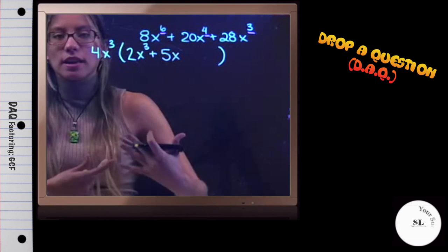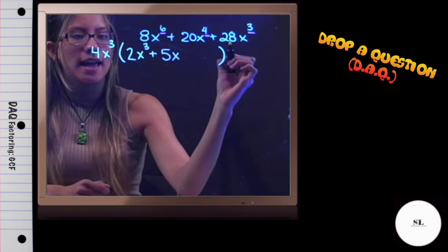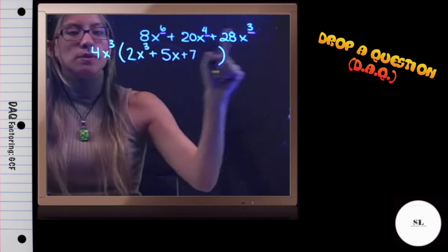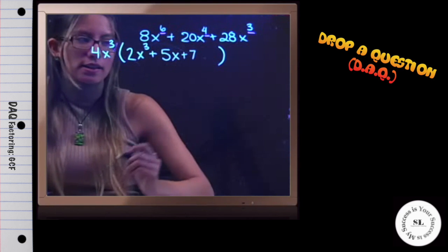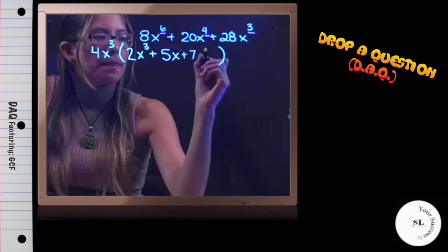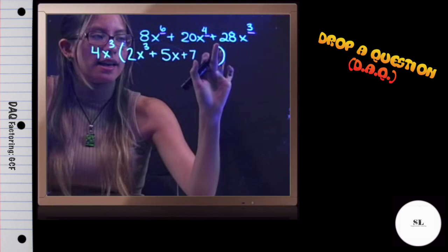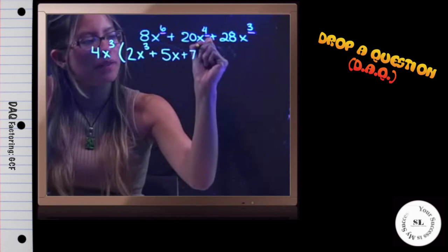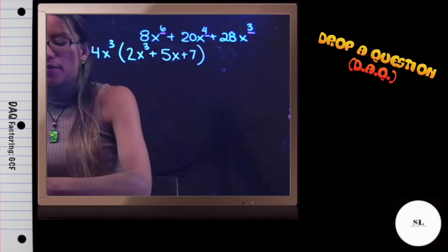You can think about it as multiplication or division. 28 divided by 4 is 7. x^3 divided by x^3 is just 1—they actually cancel out. So 7 times 1 is just 7. That would be the factored form with the GCF only.